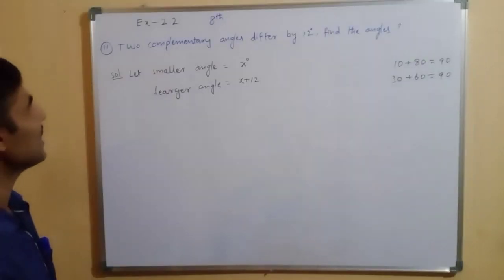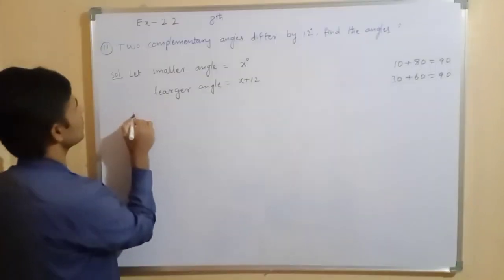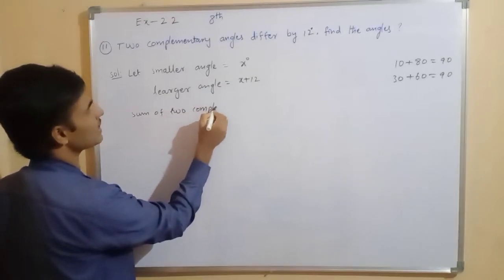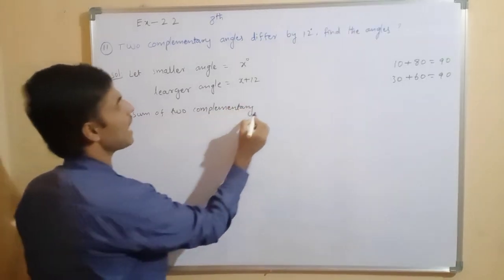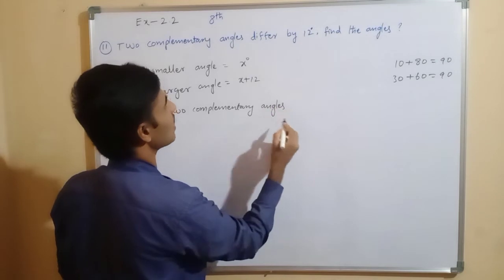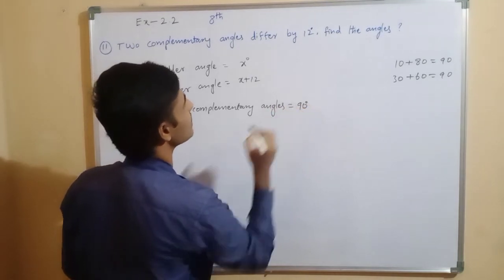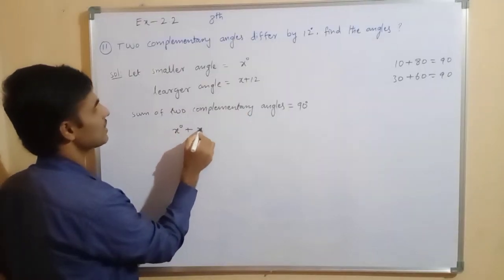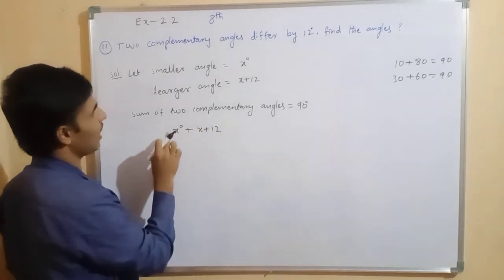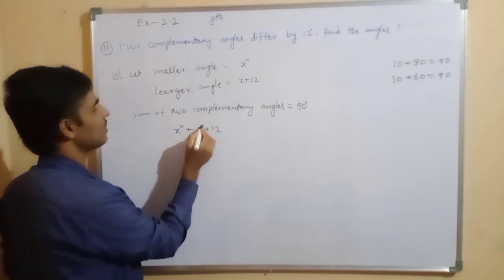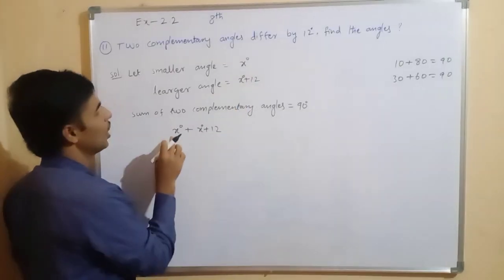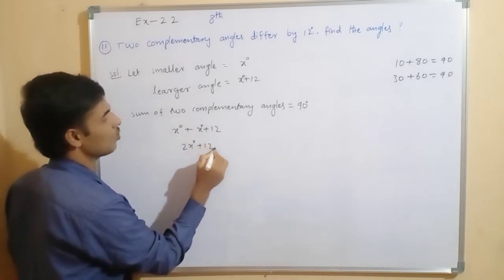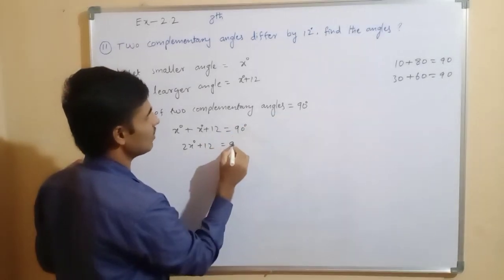Now, here, sum of the two complementary angles equal to, so we know that one here. Sum of two complementary angles equal to 90 degrees. Sum means these two we have to add. So add means you are getting here, x degrees plus x plus 12, okay? So x degrees plus x degrees, 2x degrees, okay? Plus 12, equal to, here how much is there? 90 degrees.